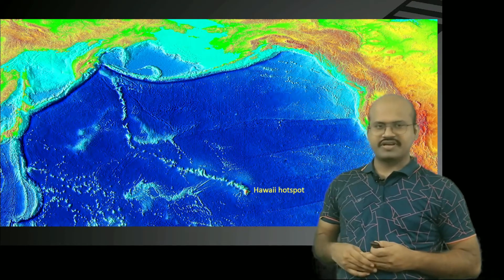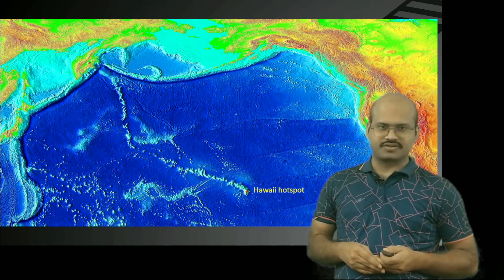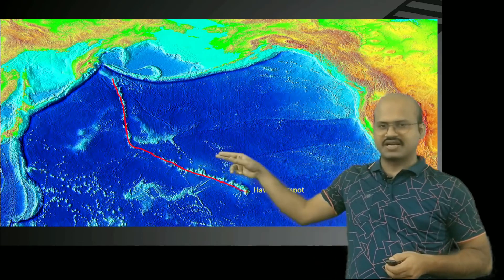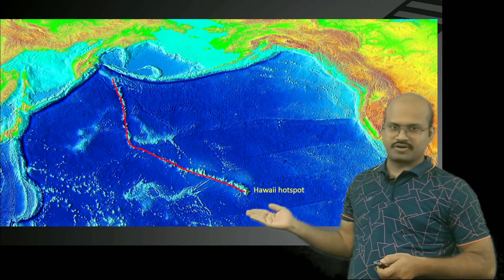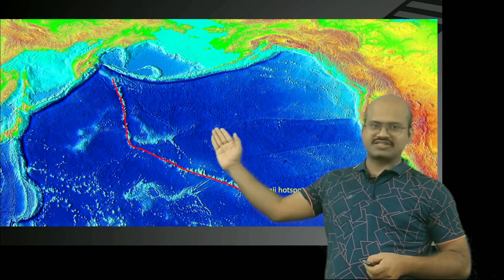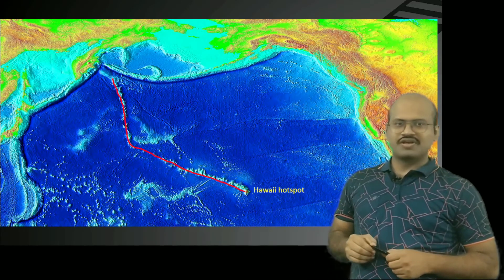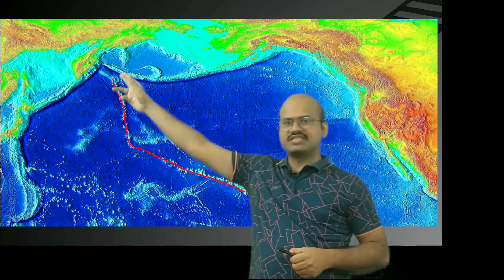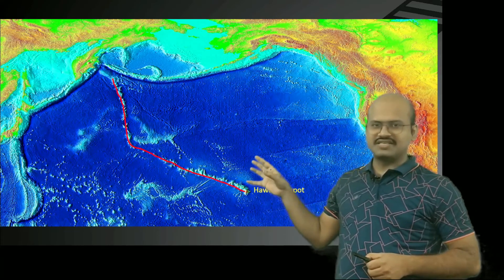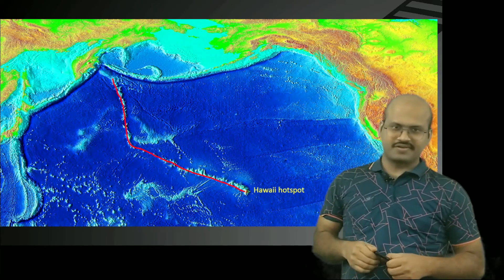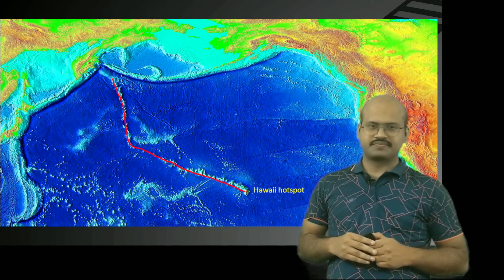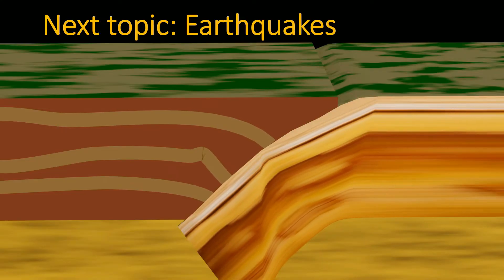Another important hotspot is the Hawaiian hotspot, located in the Pacific Ocean. A chain of mountains has been created by this hotspot. Over the years these mountain chains move in the direction of the plate movement, and by examining the chain of mountains we can determine in which direction the plate has moved historically.